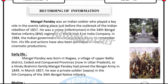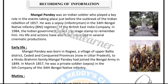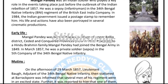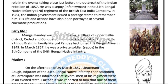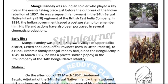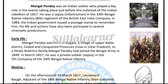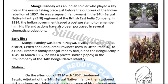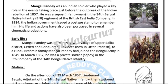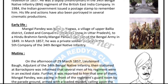Next, mutiny: on the afternoon of 29th March 1857, Lieutenant Baugh, adjutant of the 34th Bengal Native Infantry then stationed at Barrackpore, was informed that several men of his regiment were in an excited state.